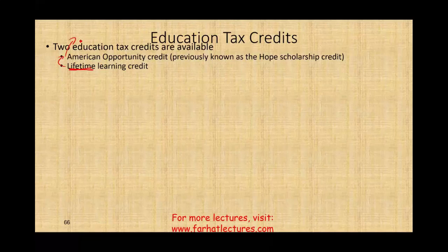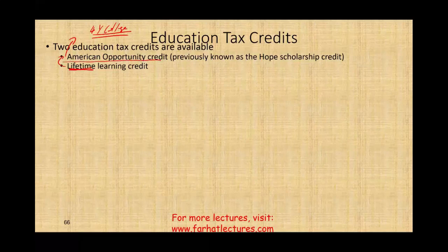The American Opportunity Credit applies to the first four years of higher education. Once you use this up, the Lifetime Learning Credit is available to you. If you go to graduate school, if you take additional courses — whatever you do — it's available to you. It's Lifetime. It's for life.